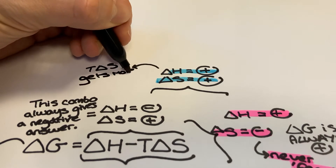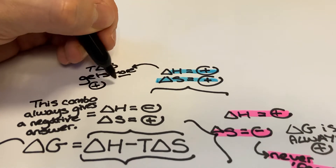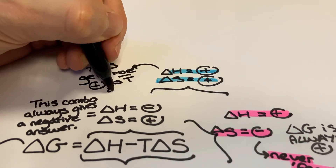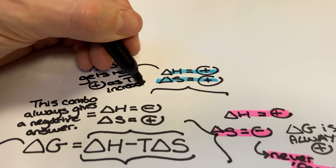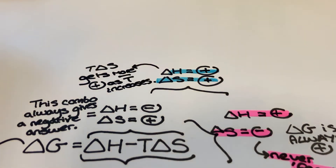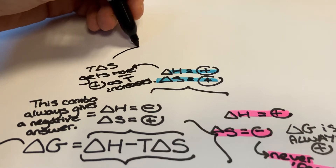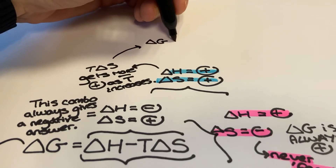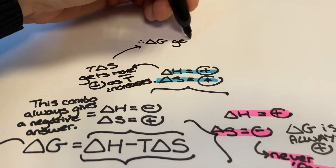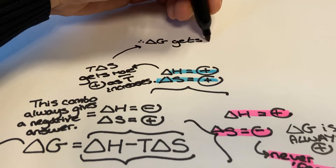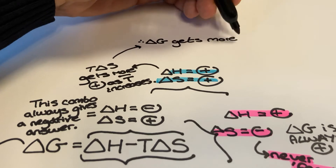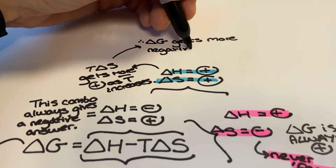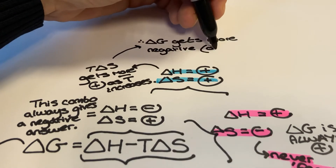Our final combination is that of an endothermic enthalpy change — a positive delta H — and a positive delta S. A reaction with this combination would become more feasible at higher temperatures as delta G gets more negative with increasing T. This is because the T delta S term gets more positive with increasing temperature, and once delta H is less than T delta S, delta G will equal a value of less than zero. So there must be a temperature at which the feasibility of the reaction changes.